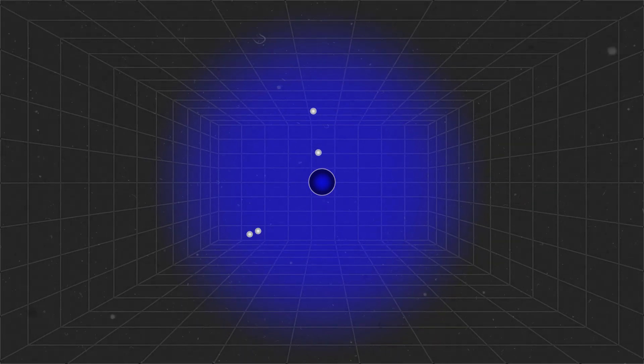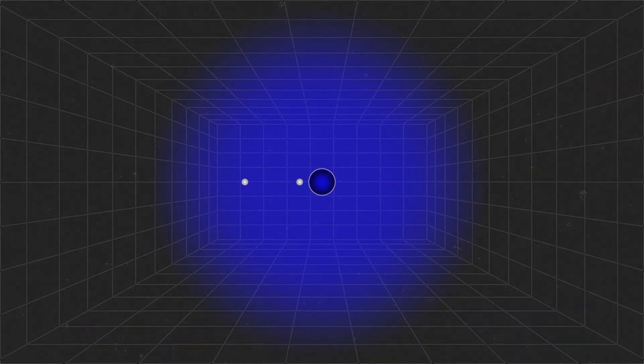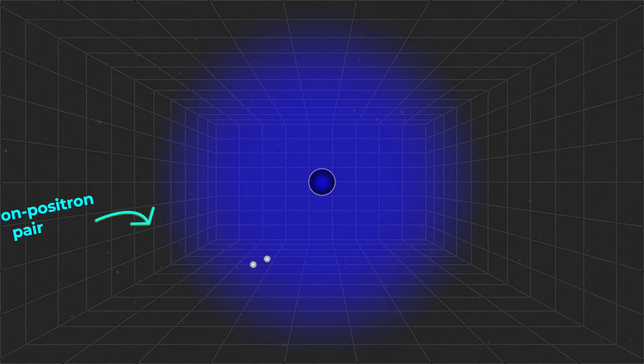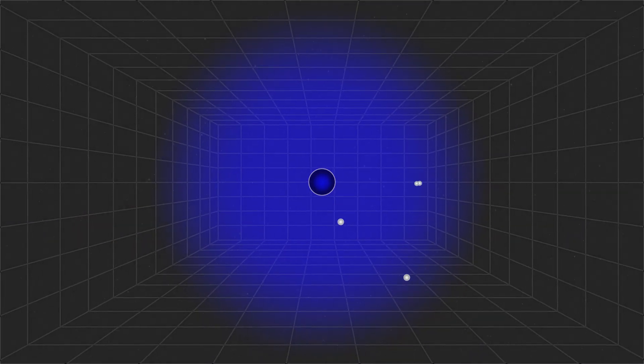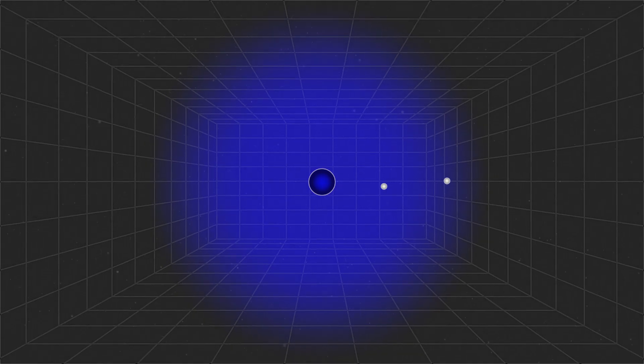When a charged particle, like an electron, moves through this vacuum, it can polarize these virtual pairs. For example, a virtual electron-positron pair might momentarily pop into existence, with the virtual electron being attracted to the real charged particle and the virtual positron being repelled. This polarization of the vacuum essentially creates a charge screen around a particle.